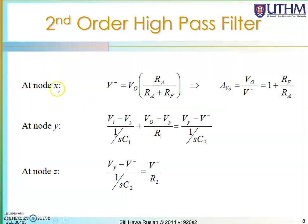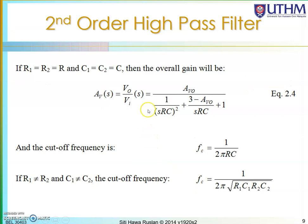We now have three equations: from node X (the amplifier gain), from node Y, and from node Z. Using these three equations and simplifying to find Vo over Vi, and setting R1 equal to R2 (call it R) and C1 equal to C2 (call it C), the gain Av = (1 + Rf/Ra) divided by [(1/sRC)² + (3 minus Avo)/sRC + 1]. This is the transfer function for the second order high pass filter.